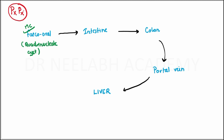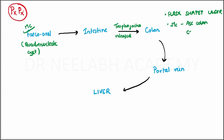In the intestines, the trophozoites are released. In the colon, there are several important points. First of all, flask-shaped ulcers are formed, which are most common in the ascending colon and cecum. 25% of patients with colitis present with diarrhea.